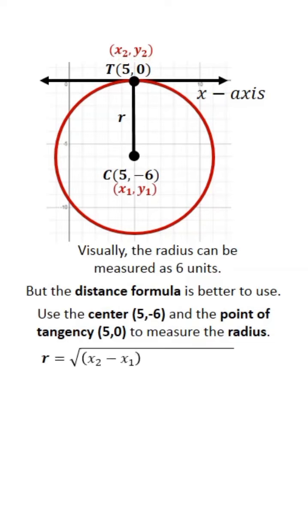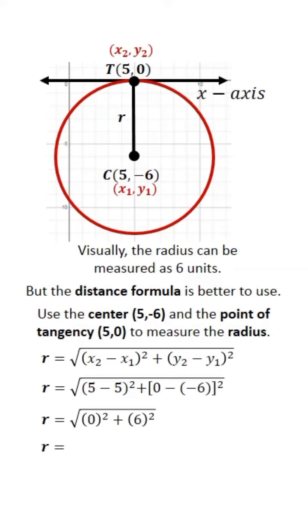This is the distance formula. Substitute the values and simplify. R is equal to 6. Therefore, the radius is 6 units.